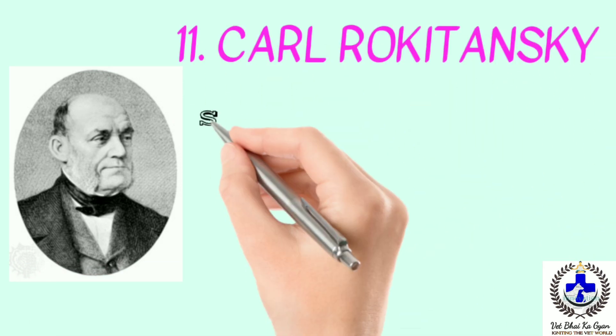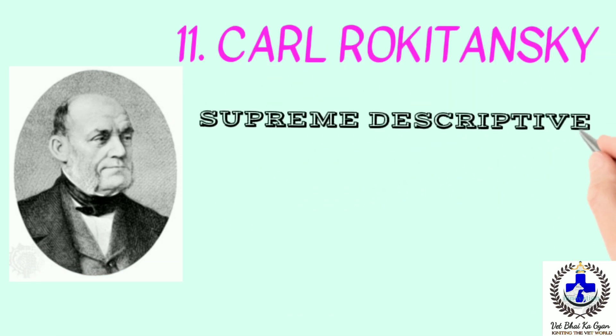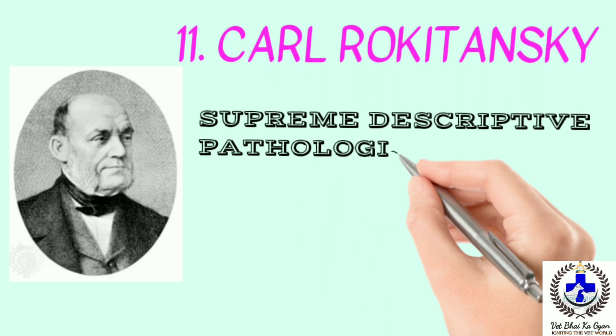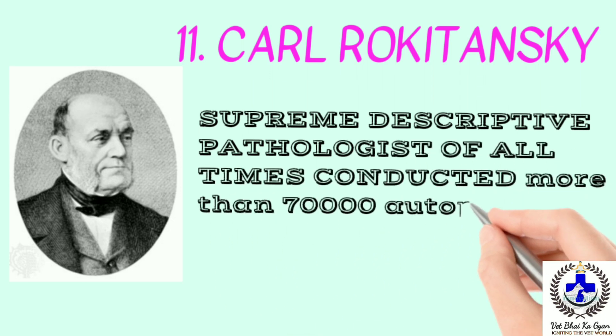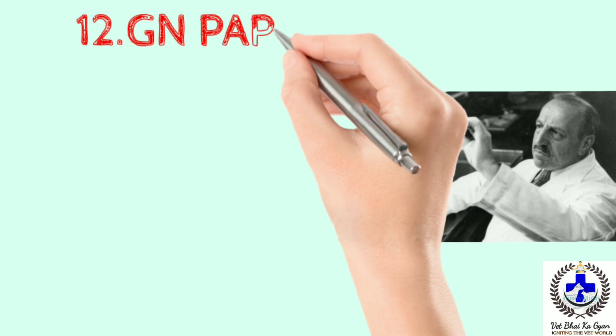Next we talk about famous scientist Carl Rokitansky — he is the supreme descriptive pathologist of all times and conducted more than seventy thousand autopsies in his life. Next we talk about G.N. Papanicolaou — he is the father of exfoliative cytology.